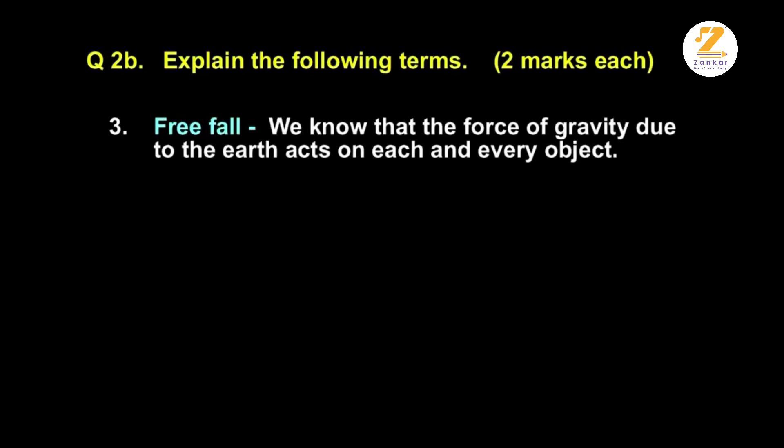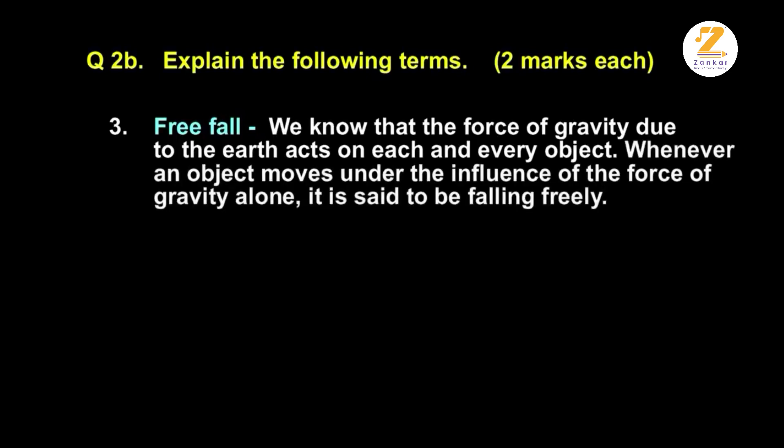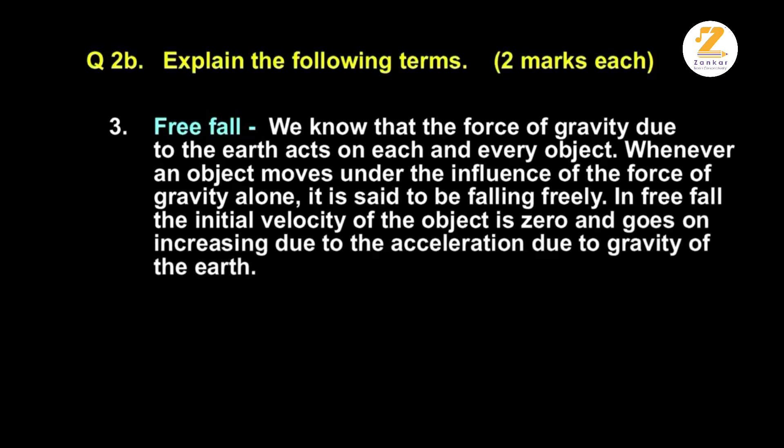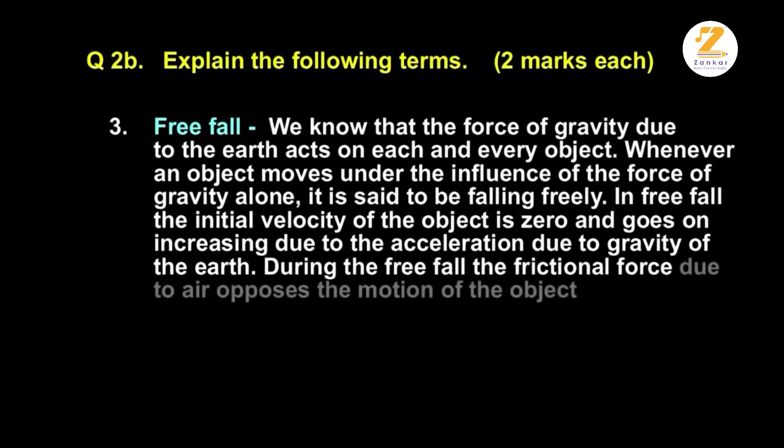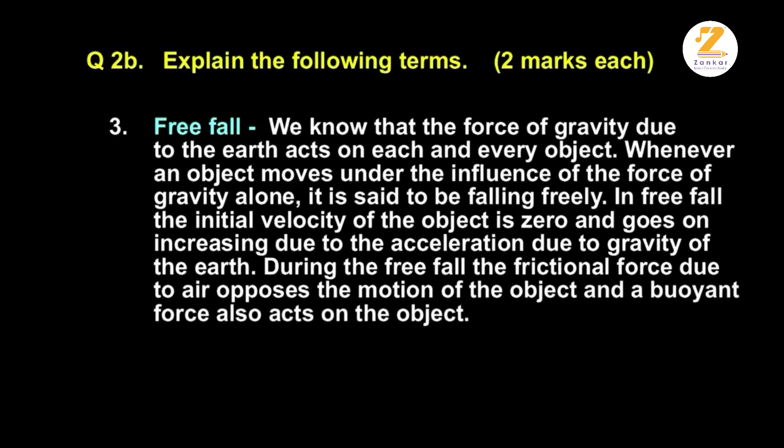The force of gravity due to the earth acts on each and every object. Whenever an object moves under the influence of the force of gravity alone, it is said to be falling freely. In free fall, the initial velocity of the object is zero and goes on increasing due to the acceleration due to gravity of the earth. During the free fall, the frictional force due to air opposes the motion of the object and a buoyant force also acts on the object. Thus, true free fall is possible only in vacuum.